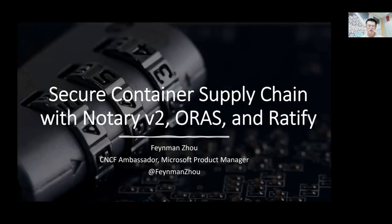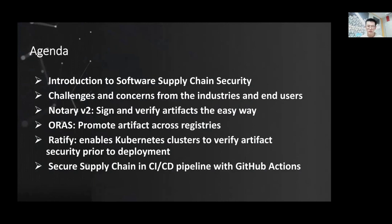Specifically, I will first introduce what is software supply chain security. Next, I will talk about the challenges and concerns from the industries and our end users. I will walk you through the CNCF open source projects in this area, such as Notary V2, ORAS, and Ratify. We can leverage Notary V2 to sign and verify artifacts, use ORAS to promote artifacts across registries, and if you are running applications on Kubernetes, Ratify enables Kubernetes clusters to verify artifact security prior to deployment. We will also provide our practice to automate and build a secure supply chain in CI/CD pipeline with GitHub Actions.